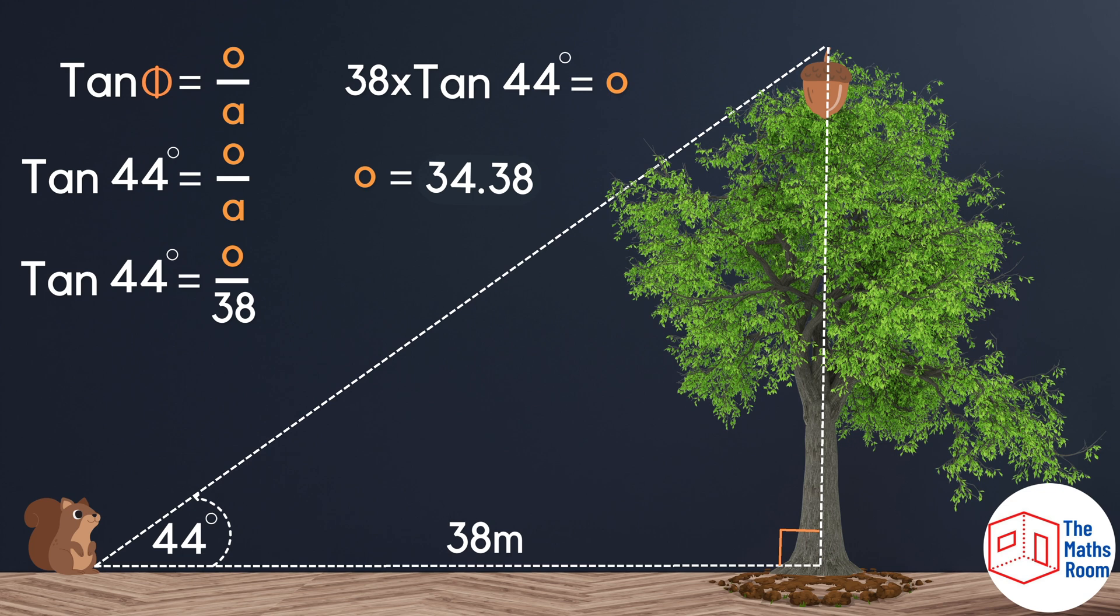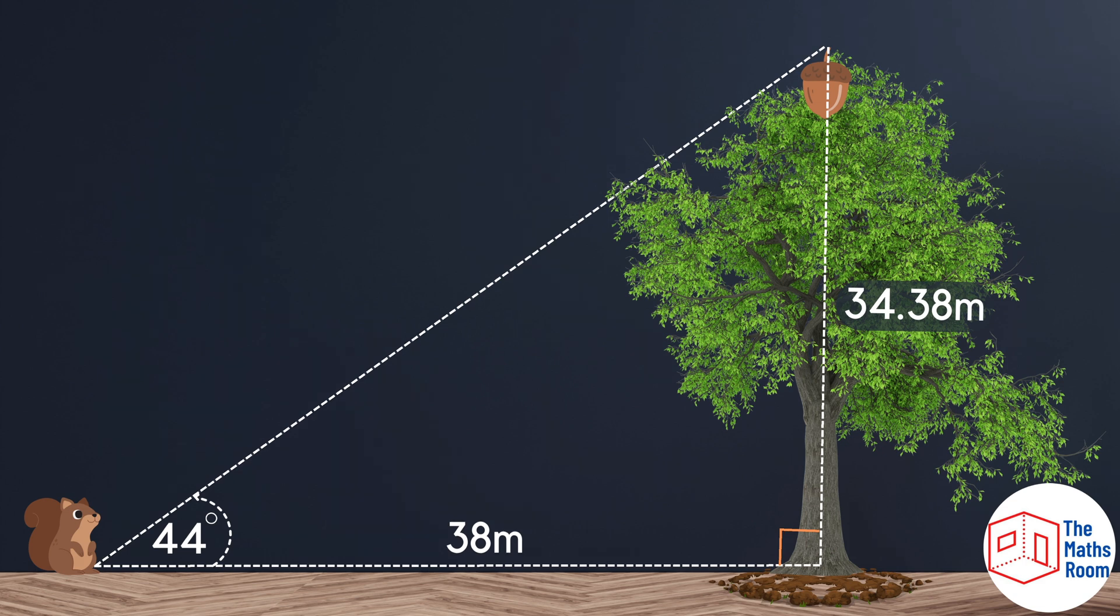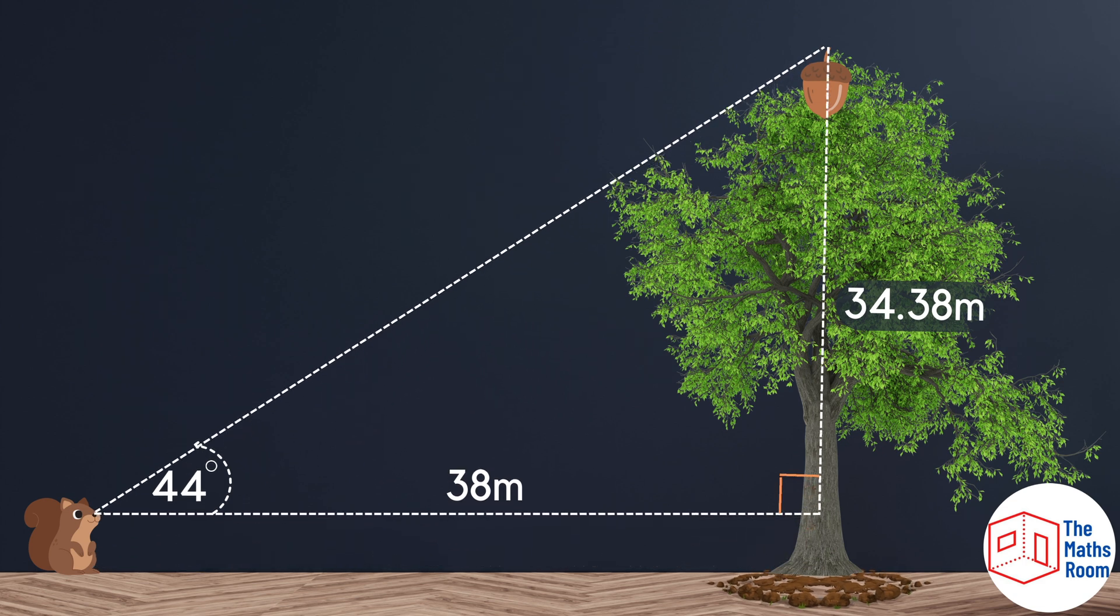Another very important note here. This is assuming that Scabbers is really really short or was lying on his belly when that calculation was done. That 44 degrees.